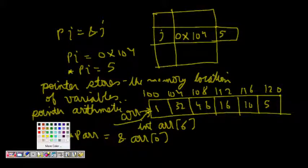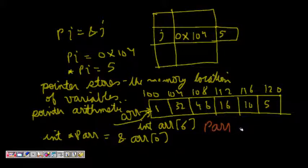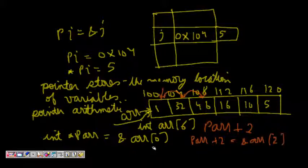So it means if I do PARR plus, say, 2, it will point now to not 100 plus 2 which is 102, but it will point to 2 elements that are next to it. So right now PARR is here, it goes to this one, it goes to this one, and now PARR plus 2 will be equal to ampersand of ARR[2]. So this is about pointers